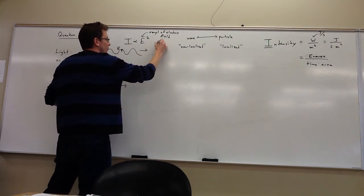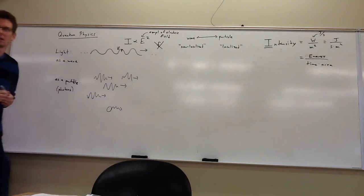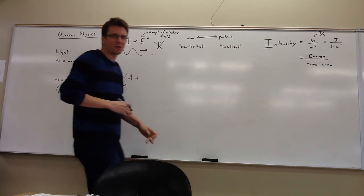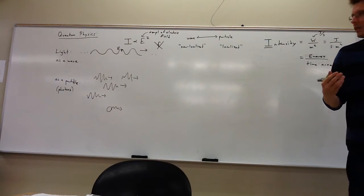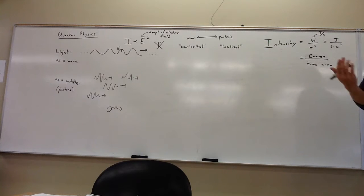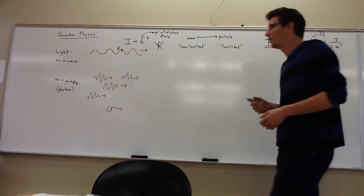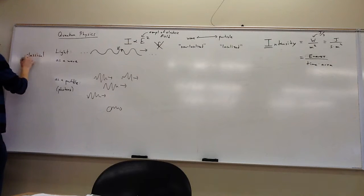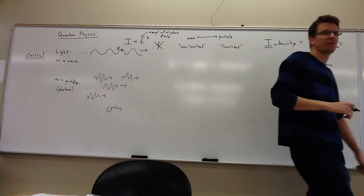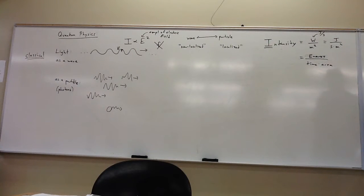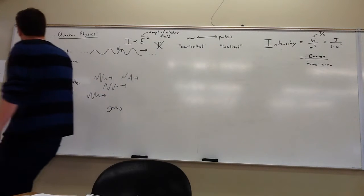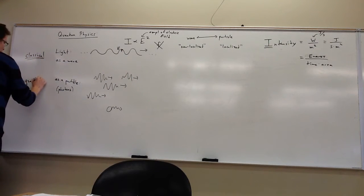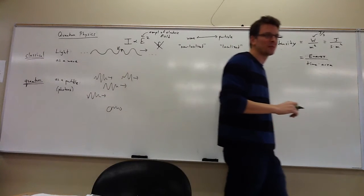Notice there's no mention whatsoever of the frequency of the light. In this wave picture, the only thing we should care about is what is the amplitude of the electric field. Whether the wavelength is short or long, whether the frequency is big or small, you should get the same intensity. This is called the classical picture — back in the day they didn't know that light could act as a particle, so this distinguishes it from the quantum picture, when they eventually figured out that light can be thought of as small particles.